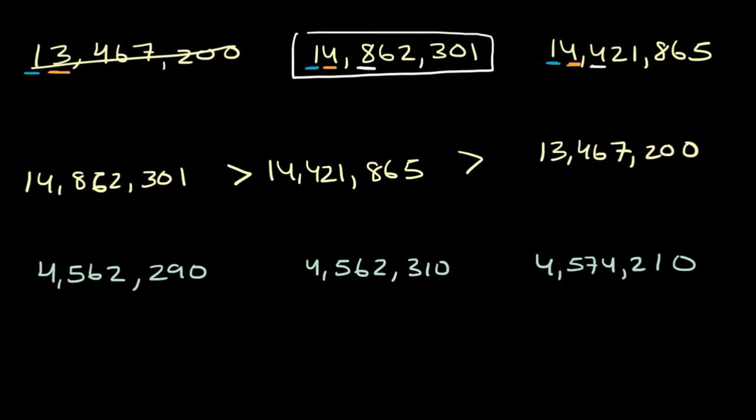All right, now let's do this next group of three numbers. Same idea. Let's make sure that we're starting at the same place value. Millions, millions, millions, and they all have 4s there. So no difference there. Then we go to the 100,000s: 5, 5, 5. No difference.